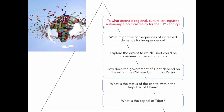Finally, we get to the very top, which is evaluation. The sort of question asked here is: 'To what extent is regional cultural and linguistic autonomy a political reality for the 21st century?' What we're talking about here is the lessons learned from an analysis of the situation in Tibet, based on the lower levels in the hierarchy. We can now start applying that to a whole variety of related concepts in political, social and other environments.